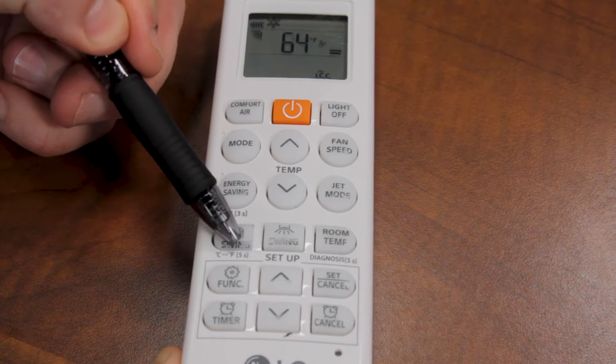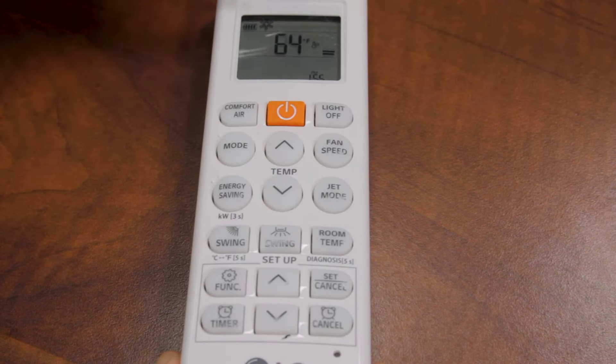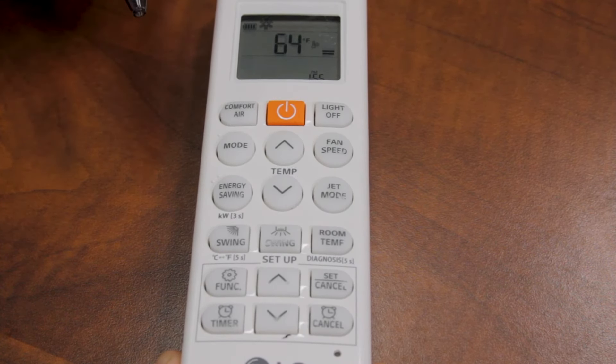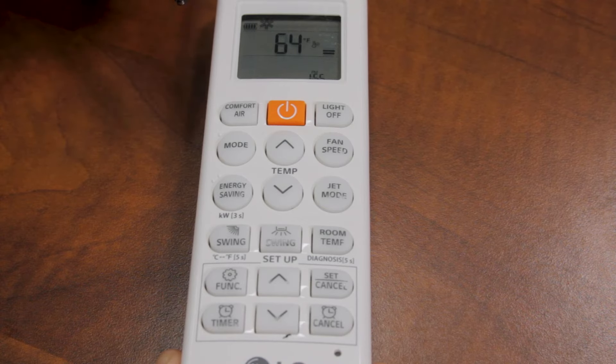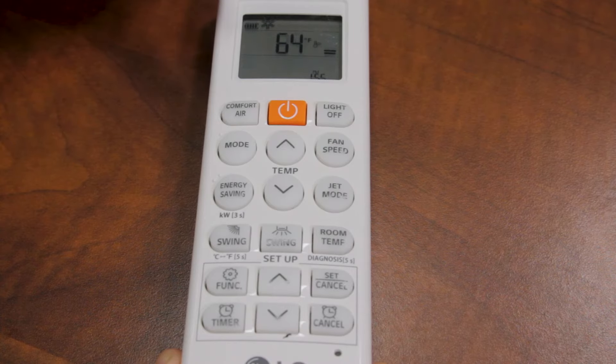Then you press it one more time and the display is going to go away. That means it's in automatic mode. If it's in cooling, it's going to point the air straight forward because cold air drops. And if it's in heating, it's going to point it all the way down because hot air rises.